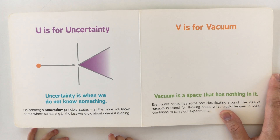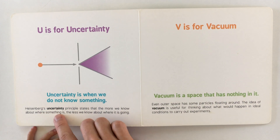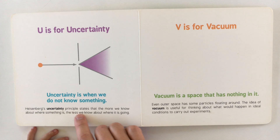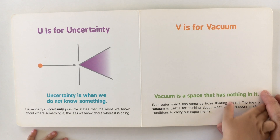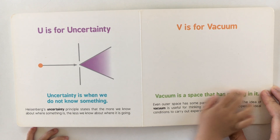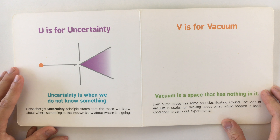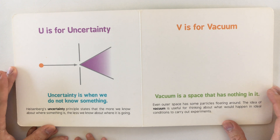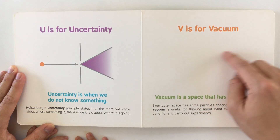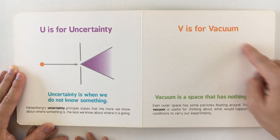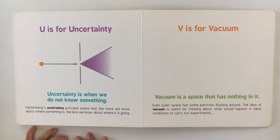U is for uncertainty. Uncertainty is when we do not know something. Heisenberg's uncertainty principle states that the more we know about something's speed, the less we know about where it is going.